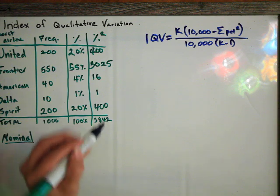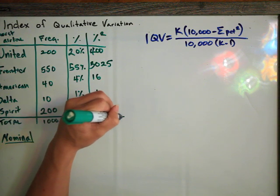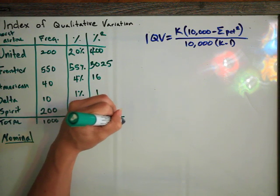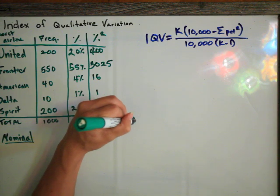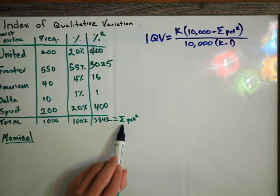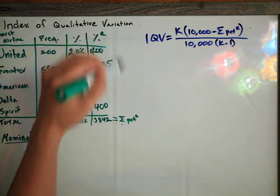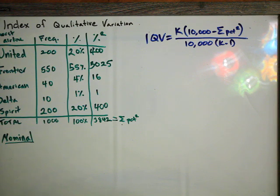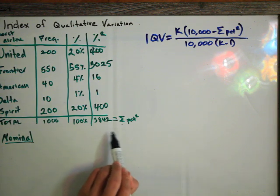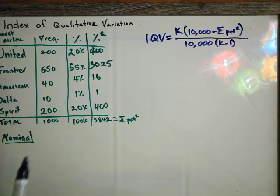That gives us 3,842. This number is the sum of percent squared — sigma means add everything up in the percent squared column — so the sum of percent squared is 3,842.